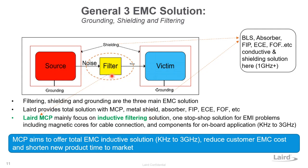MCP provides a filtering function to block and absorb noise. MCP aims to offer EMC solutions in the frequency range of kilohertz to 3 GHz. Beyond that frequency, you should approach other Laird performance material solutions like EMI absorbers, foil-level shields, metal shields, and other conductive material solutions. Overall, Laird offers a total solution from very low frequency kilohertz up to 100 GHz, but MCP focuses on filtering in the kilohertz to 3 GHz range.